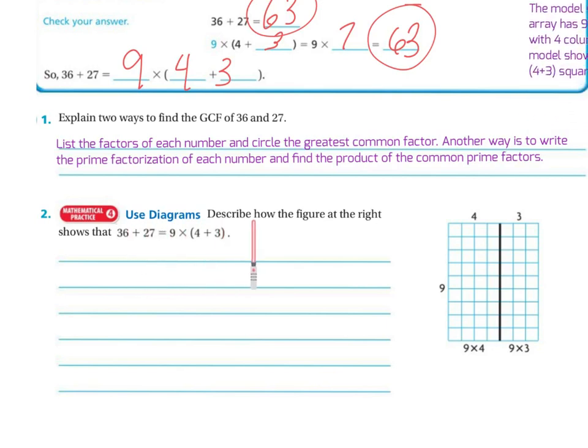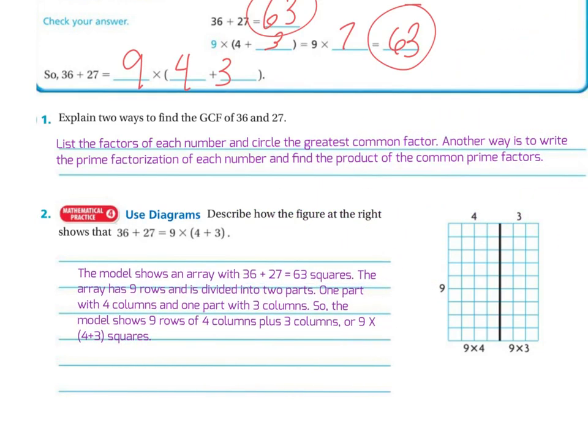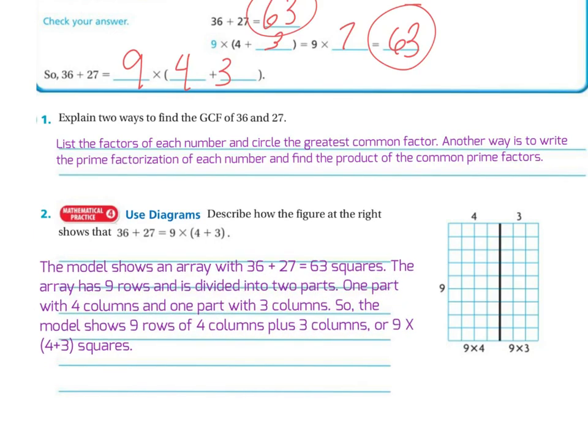So using the Venn diagram, explain how the figure at the right shows that 36 plus 27 equals 9 times 4 plus 3. Well, the model shows an array with 36 by 27, which equals 63 squares. The array has 9 rows divided into 2 parts, and one part has 4 columns, and the other part has 3 columns. So the model shows 9 rows with 4 columns plus 3 columns, or 9 times, and then in parentheses, 4 plus 3 squares.